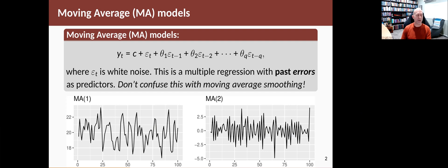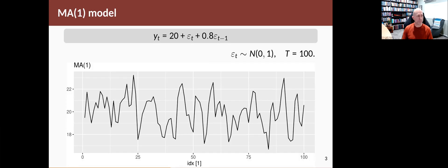Let's look at each of those more closely and what parameters we use to get series that look like that. So the first one, the one on the left, is this setup: Yt equals 20 plus an error term plus 0.8 times the last error term. And the errors are simply standard normal random variables.